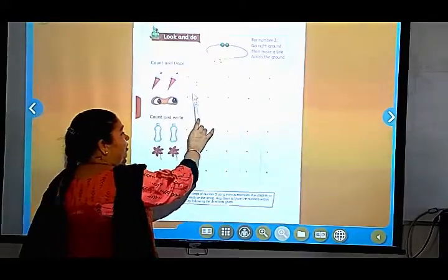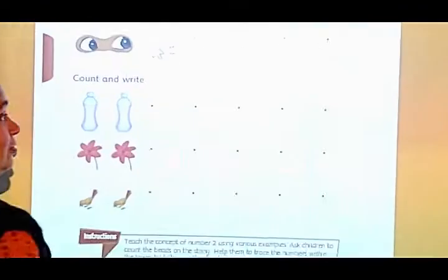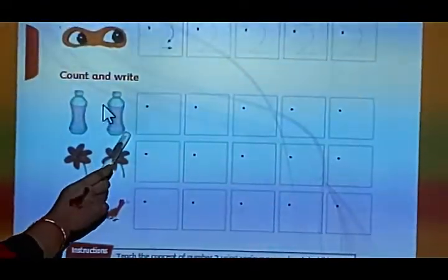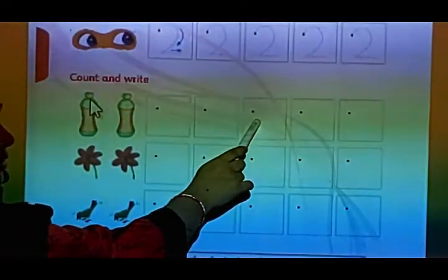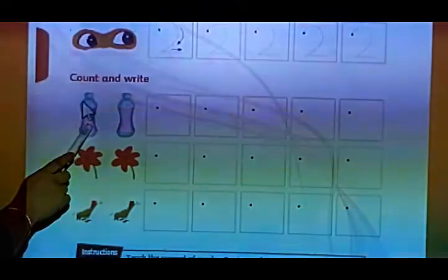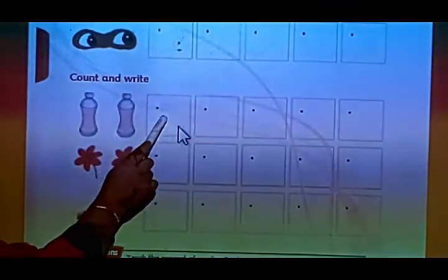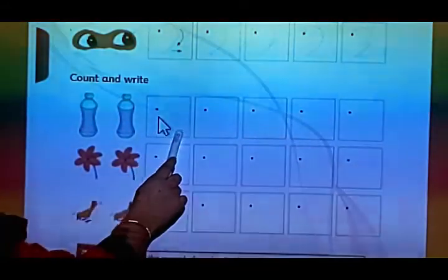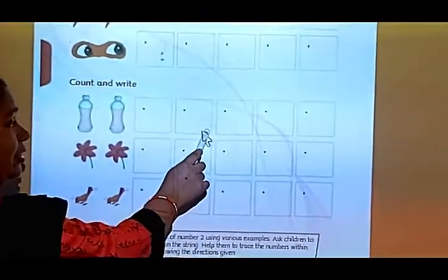We will color this. The next is count and draw. First you count the object and draw in the boxes. So one, two. Two bottles. So write here, two. First you curve and then sleeping leg. Curve and sleeping leg.